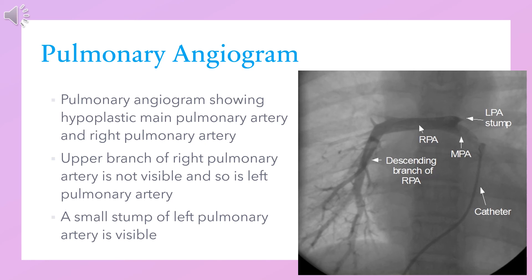The pulmonary angiogram shows a hypoplastic main pulmonary artery and right pulmonary artery. The upper branch of the right pulmonary artery is not visible, nor is the left pulmonary artery. Only a small stem of the left pulmonary artery is visible.